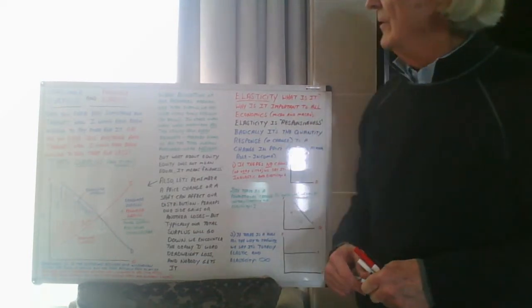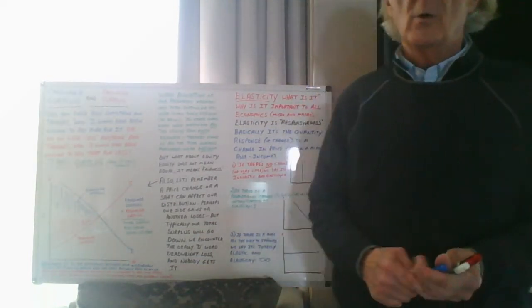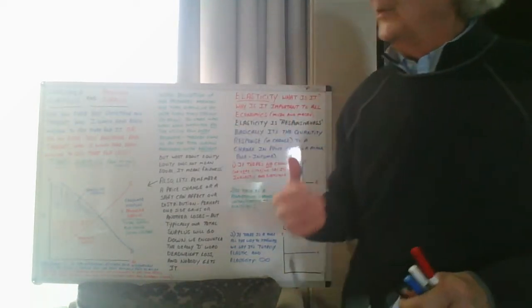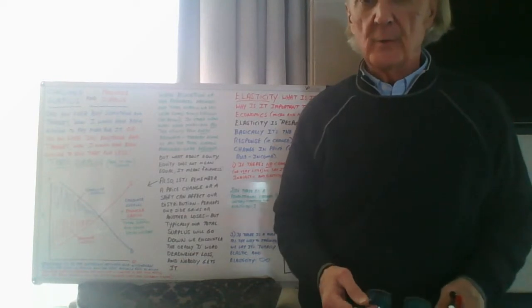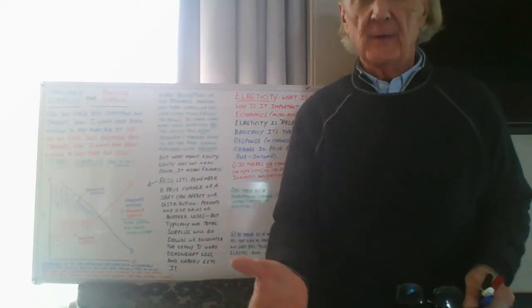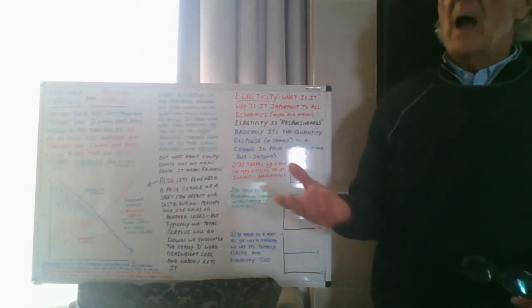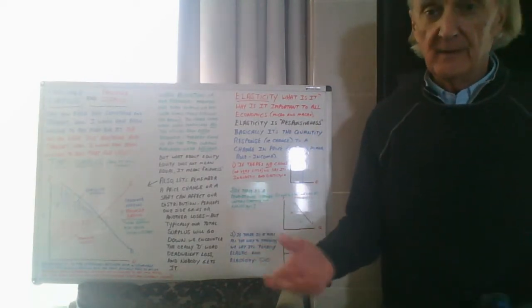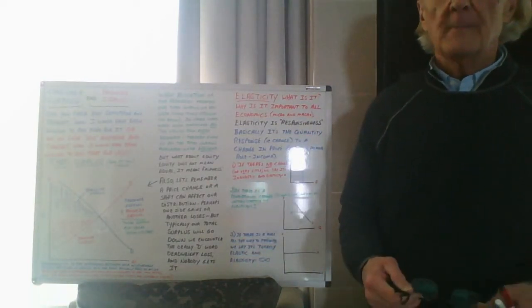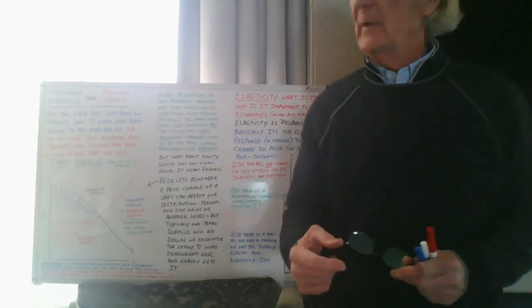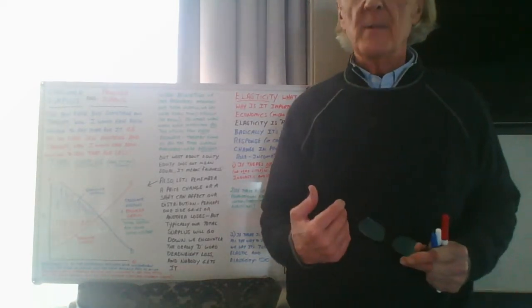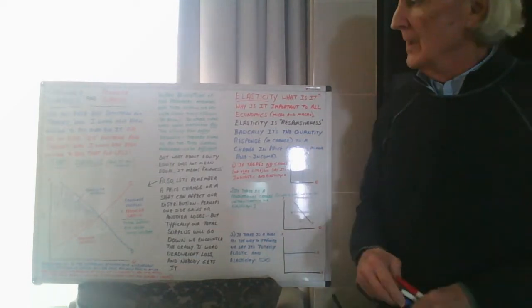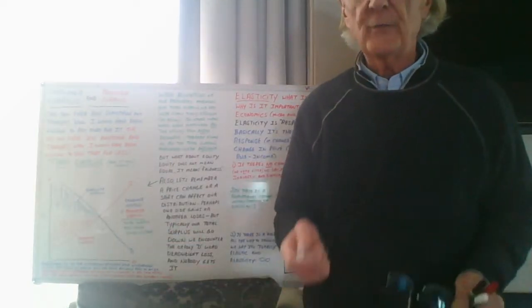Now we're moving to the idea of consumer surplus and producer surplus. Consumer surplus has to do with something that's happened to all of us: you've bought something and while paying for it, in the back of your mind you're thinking, 'I'm pretty happy because I would have been willing to spend more on this item.' That additional amount you would have been willing to spend is what is known as consumer surplus. You would have been willing to spend more, but you didn't have to — because the free market established the price.